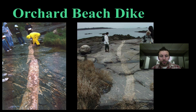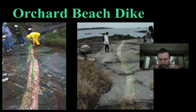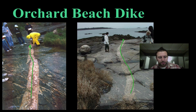We can see these igneous intrusions out at beaches — for example, if we go to Orchard Beach, we can see these igneous intrusions cutting right through the rock. So definitely when we're out in nature and we see something like this, we have to ask: what happened? Magma came up and through, cooled and hardened right in place.